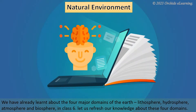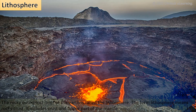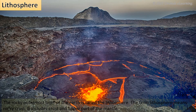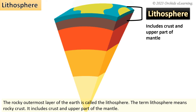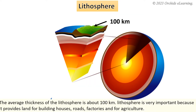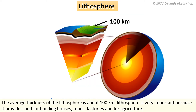Let us refresh our knowledge about these four domains. The rocky outermost layer of the Earth is called the lithosphere. The term lithosphere means rocky crust. It includes the crust and upper part of the mantle. The average thickness of the lithosphere is about 100 km.